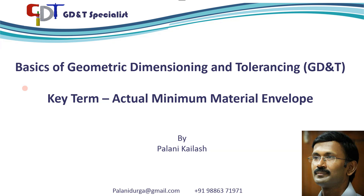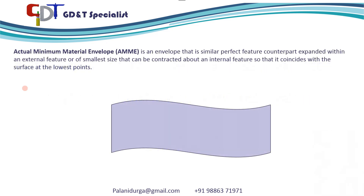Hi there, this is Palni Kailash and in this video I am going to explain about actual minimum material envelope. This actual minimum material envelope is opposite to actual mating envelope. Actual mating envelope is the envelope which is outside the material, whereas the actual minimum material envelope is the one which is inside the material.